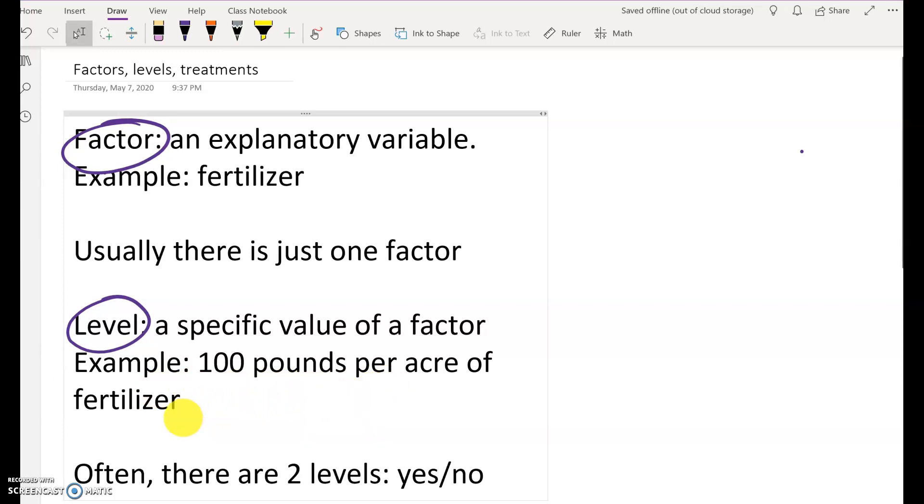Now, usually there's just two levels. Either you get the fertilizer or you don't, or you get the medication or you get a placebo or something like that.